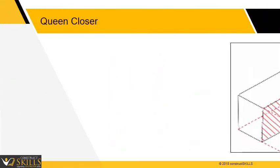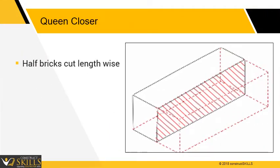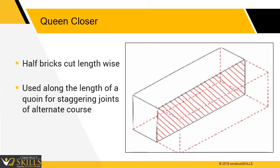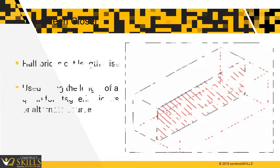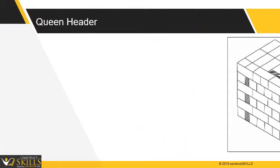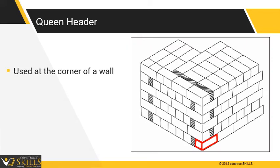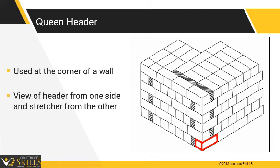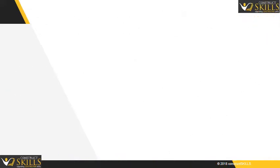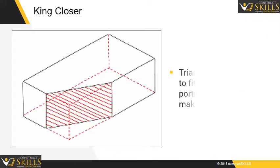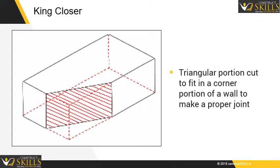Queen Closer: it is a half brick cut lengthwise. It is used along the length of a quoin — that is, masonry blocks at the corner of the wall — for staggering joints of alternate courses. Queen Header: used at the corner of a wall with a view of header from one side and stretcher from the other.